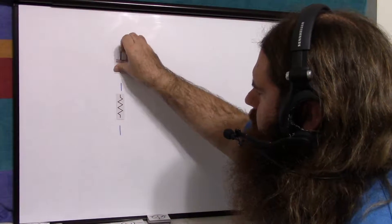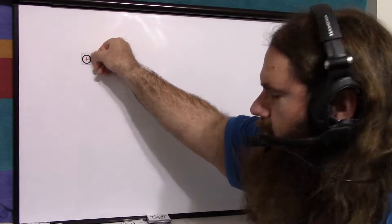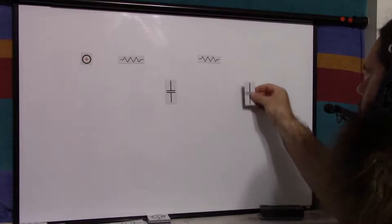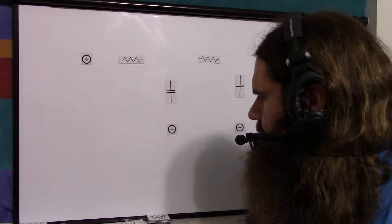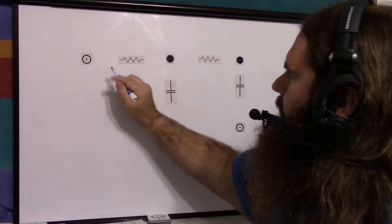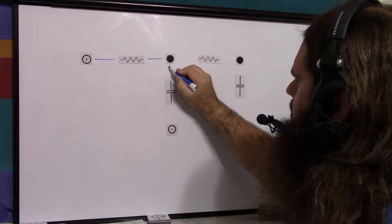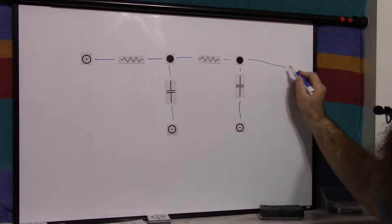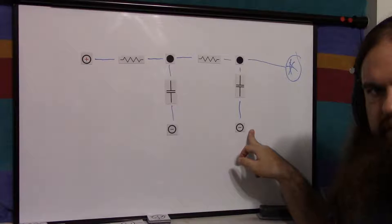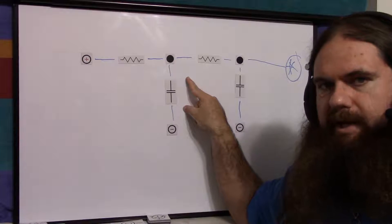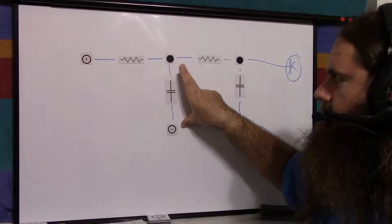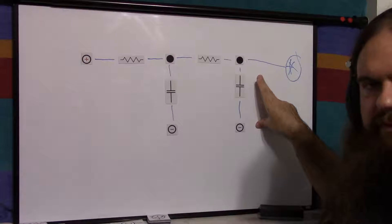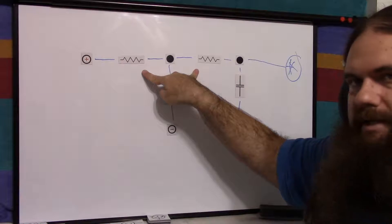We're going to do two filters in a row, and now the order will matter. So let's say we have our positive, then a resistor and a capacitor, then another resistor and another capacitor. Both capacitors connect to negative. Power goes through the resistor into the first capacitor — stage 1 of the filter — then through the second, stage 2. This is your output voltage relative to zero. You might look at this and say this is just a series resistance, so why do you need two resistors?